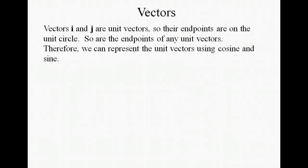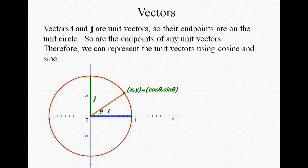Vectors i and j are unit vectors because their length is 1, and their endpoints, therefore, must be on the unit circle. Actually, the endpoint of any unit vector must be on the unit circle because they all have a length of 1, or a magnitude of 1.